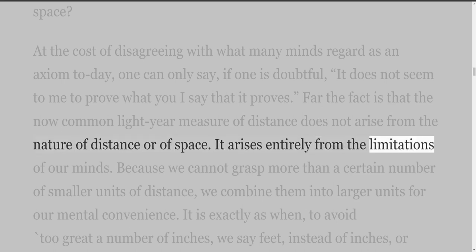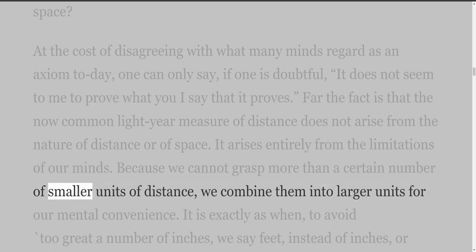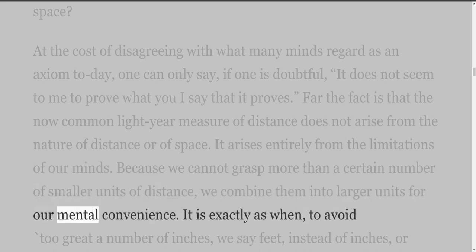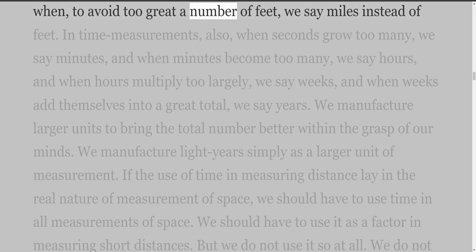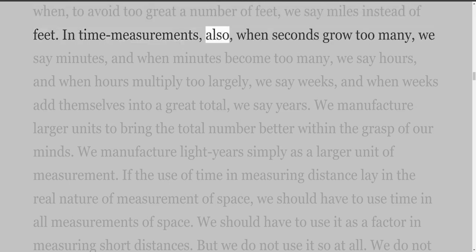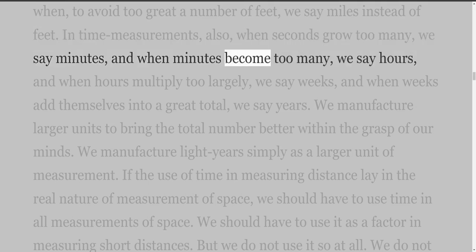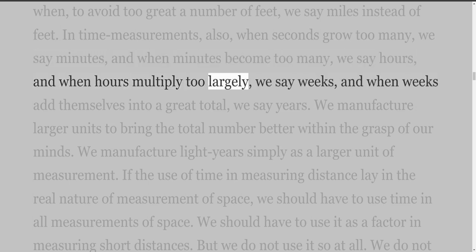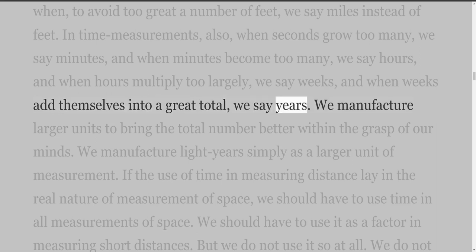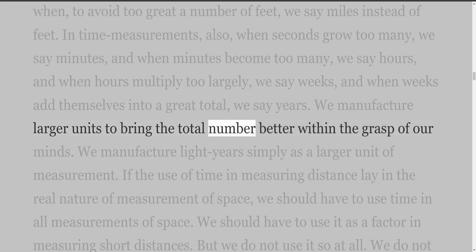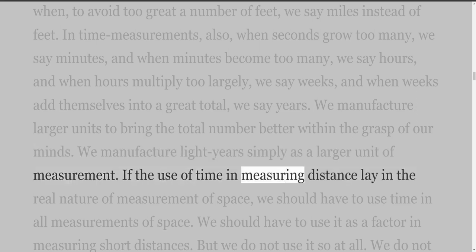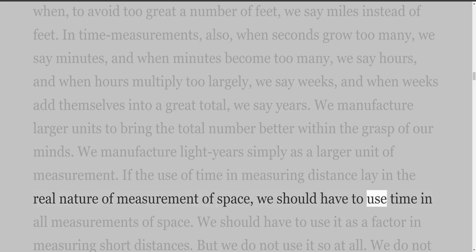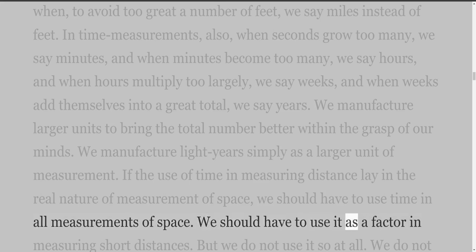The light year measure of distance does not arise from the nature of distance or of space. It arises entirely from the limitations of our minds. Because we cannot grasp more than a certain number of smaller units of distance, we combine them into larger units for our mental convenience. It is exactly as when, to avoid too great a number of inches, we say feet instead of inches, or when, to avoid too great a number of feet, we say miles instead of feet. In time measurements also, when seconds grow too many we say minutes, when minutes become too many we say hours, and so on up to years. We manufacture larger units to bring the total number better within the grasp of our minds.